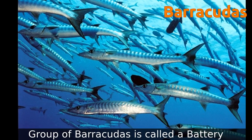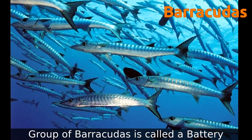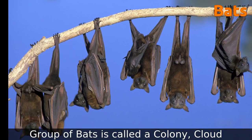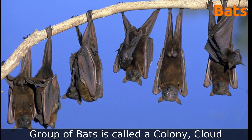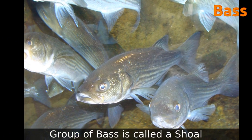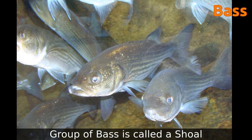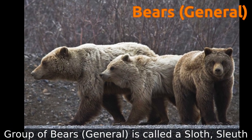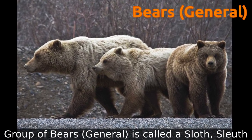A group of barracudas is called a battery. A group of bats is called a colony or cloud. A group of bees is called a swarm. A group of bears in general is called a sloth or sleuth.